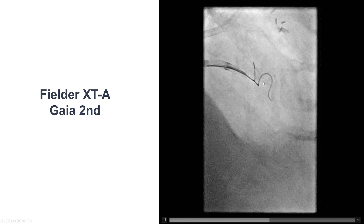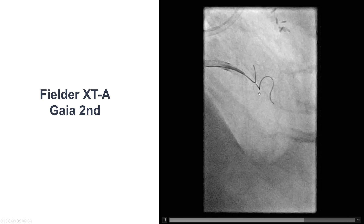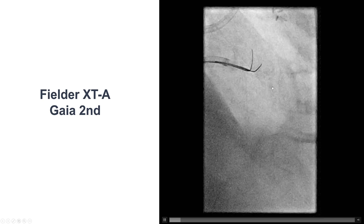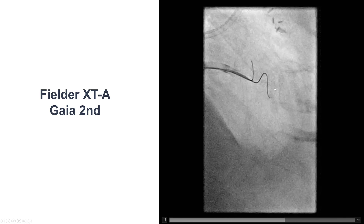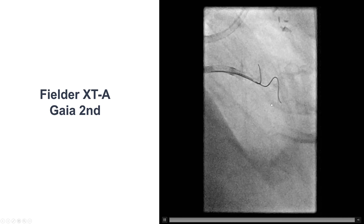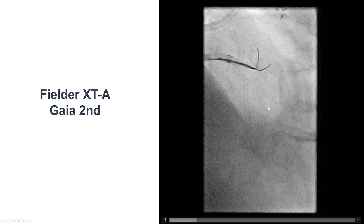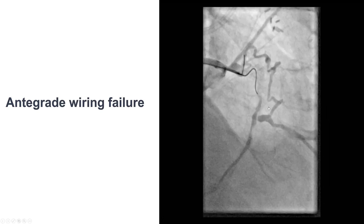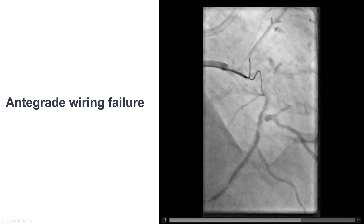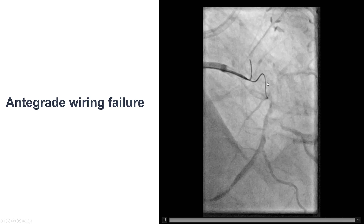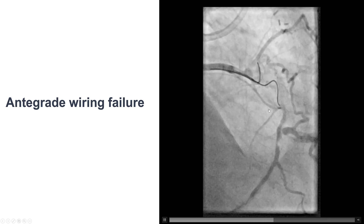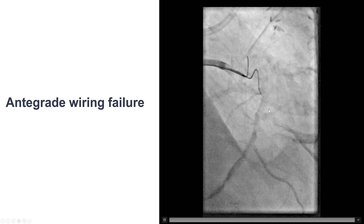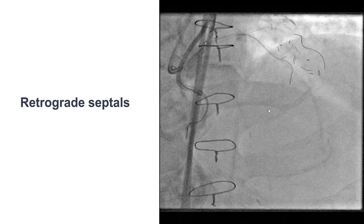Unfortunately, we made multiple attempts to advance more wires. The microcatheter could come a little further down, but we were never able to make significant progress advancing equipment further down the right coronary artery. After multiple attempts, we decided to give a try going retrograde through the septal collaterals.